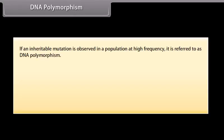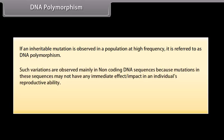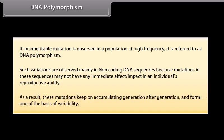DNA Polymorphism. If an inheritable mutation is observed in a population at high frequency, it is referred to as DNA polymorphism. Such variations are observed mainly in non-coding DNA sequences because mutations in these sequences may not have any immediate impact on an individual's reproductive ability. As a result, these mutations keep on accumulating generation after generation and form one of the bases of variability.